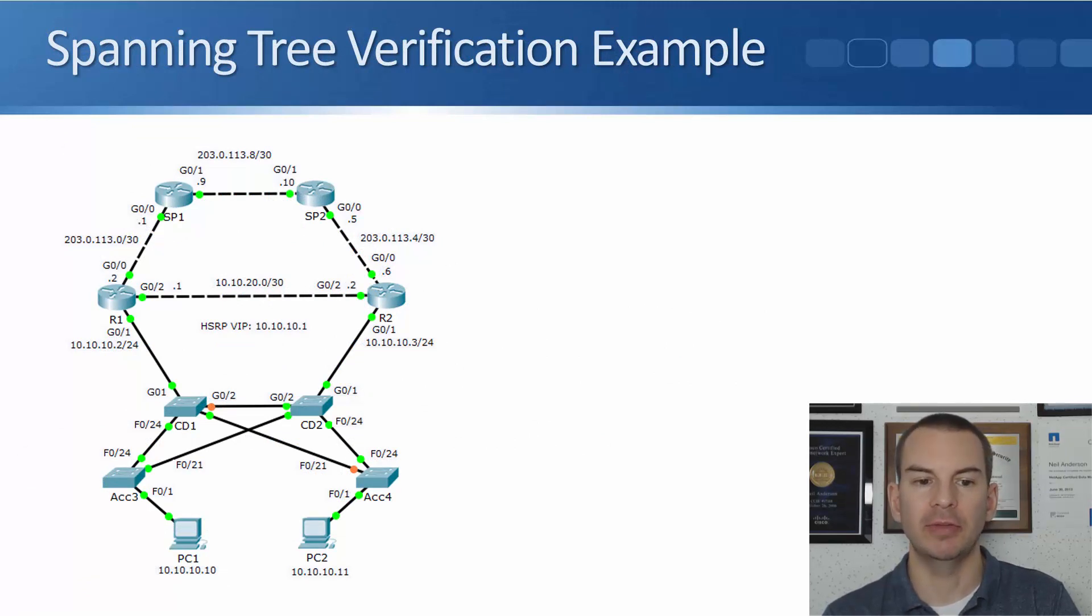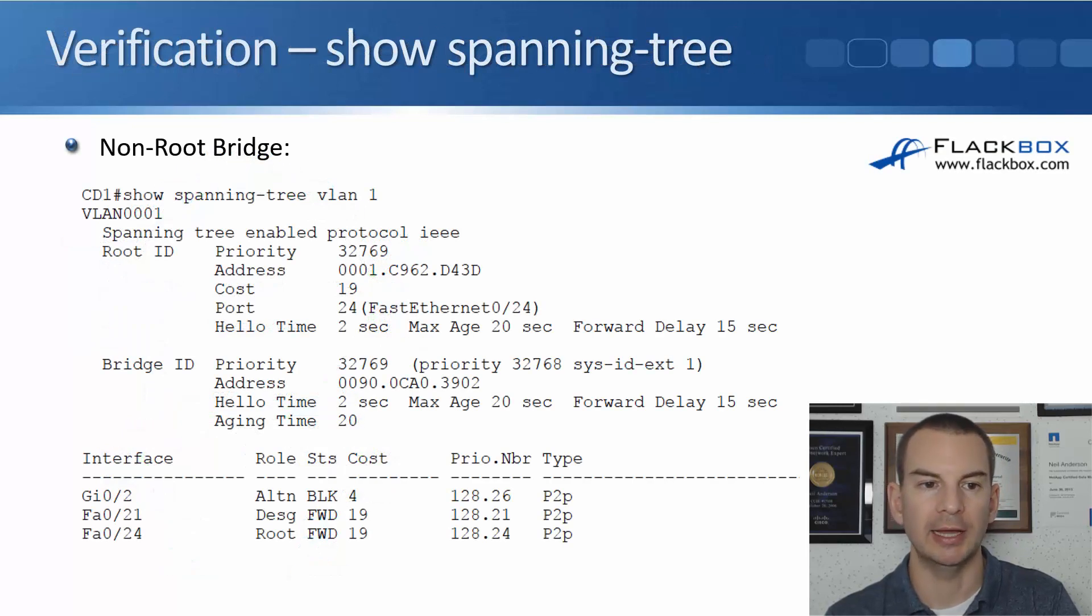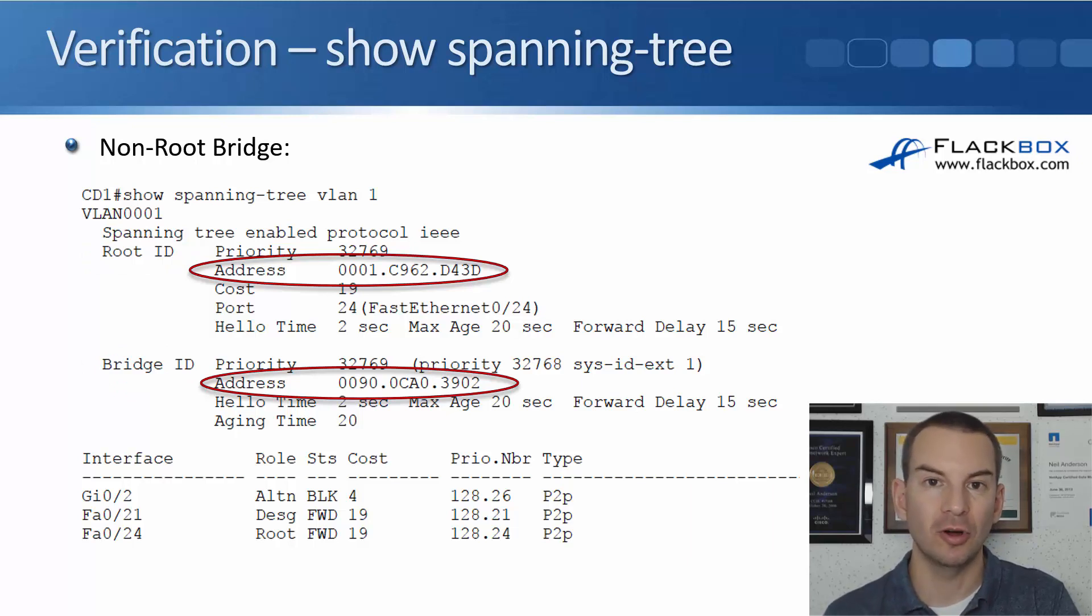Okay, next, let's look at the output on a non-root bridge. So that was on access 3. Next up, we'll look at the output on CD1. And from the diagram, we can see it is forwarding on interfaces fast 0.24 and 0.21. And it's blocking on interface gig 0.2. So looking at the output on CD1. I do a show spanning tree for VLAN 1 again. I can see that this switch is also running PVST+. You want all the switches in your network to be running the same spanning tree version. Again, we've got the root ID and the bridge ID section. And because this is not the root bridge, the two MAC addresses are different now.